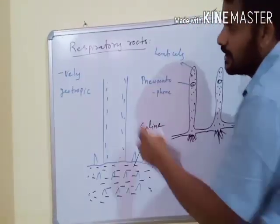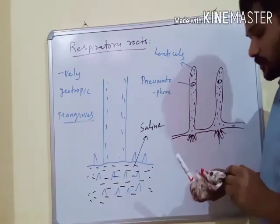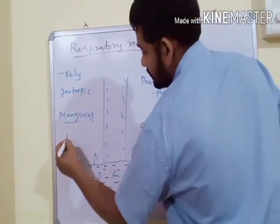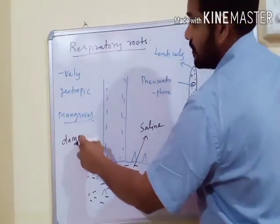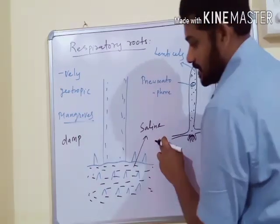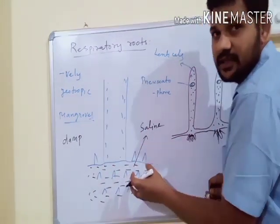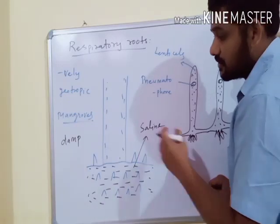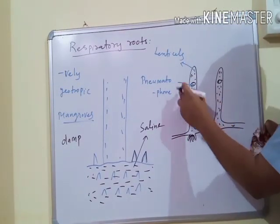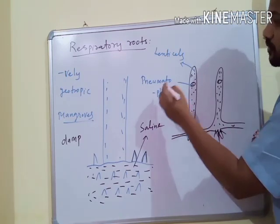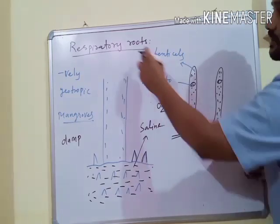Respiratory Roots are aerial, upright, and negatively geotrophic roots, usually present in mangroves. Mangroves are plants which grow in saline or damp conditions. In saline conditions, the dissolved oxygen amount is very less, so these plants don't get enough oxygen for respiration. In such conditions, some roots become aerial and negatively geotrophic, and these roots contain small pores at the apex called pneumatophores, which pick up atmospheric oxygen and supply the plant for respiration. Hence, they are called Respiratory Roots.